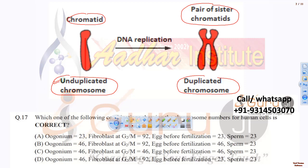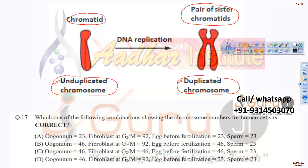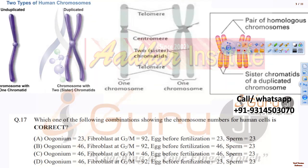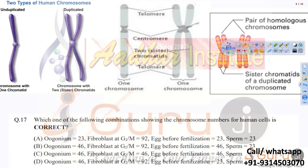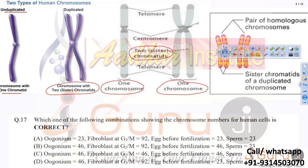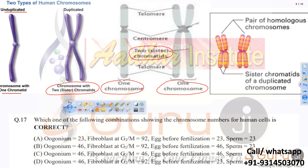Looking through different sites and literature, one genetics book clearly states that an unduplicated chromatid is basically a chromosome with one chromatid, and the duplicated one is a chromosome with two sister chromatids — both are chromosomes. On another site, one chromosome is shown as a single unit whether it has one or two sister chromatids.